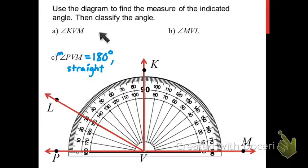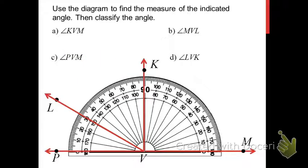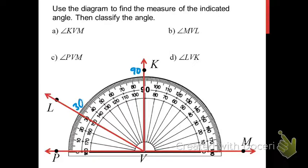We've talked about a right angle (KVM), an obtuse angle (MVL), and a straight angle (PVM). Now let's look at an example of an acute angle: angle LVK. This angle isn't lined up so that one side is at zero, so we use the protractor postulate. Assign coordinates to both sides — let's say 90 and 30 using the top row of numbers. The measure of angle LVK is the absolute value of 90 minus 30, which is 60 degrees. An acute angle is any angle between 0 and 90 degrees.